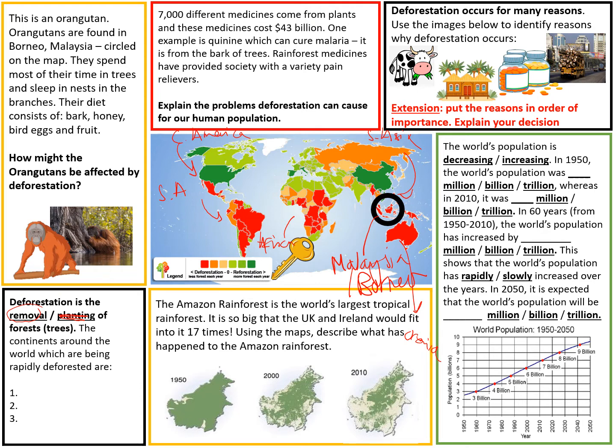In the top right hand corner, we have deforestation occurs for many reasons, and we looked at this in the last lesson, so this is mostly a recap. Then have a go at answering two other colours. Green is the easiest, the least challenging. The yellow boxes are a medium ability, and then the red box is the most difficult. Have a go at at least two of the other boxes using the information on the screen and also the map in the middle.